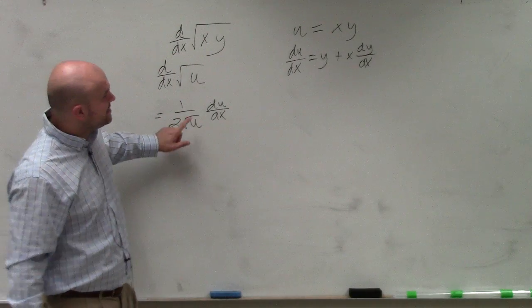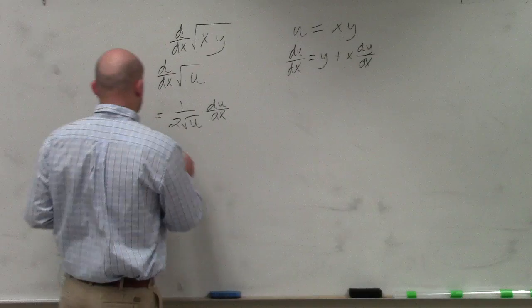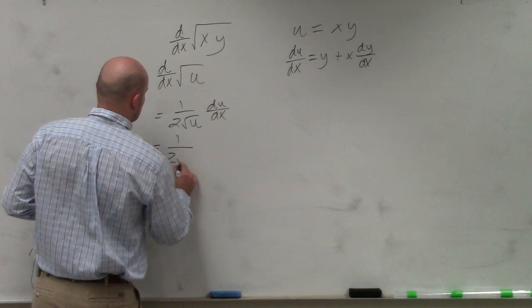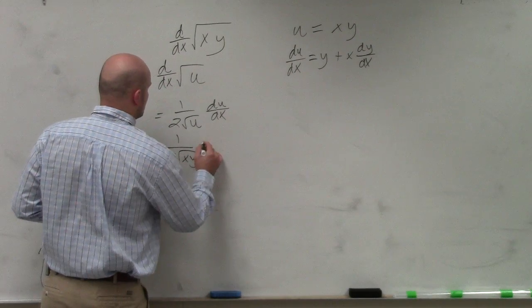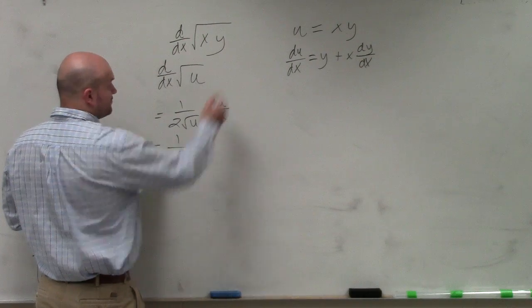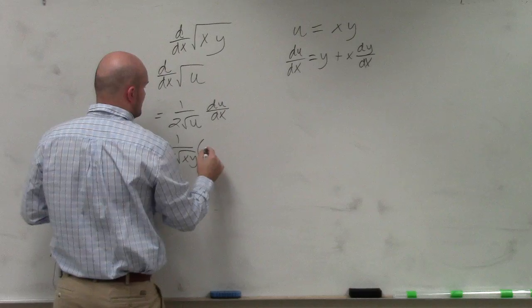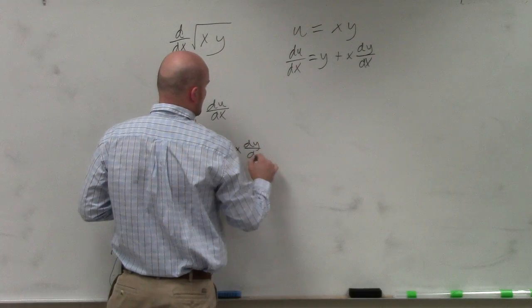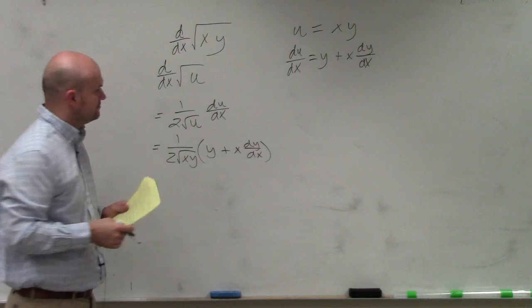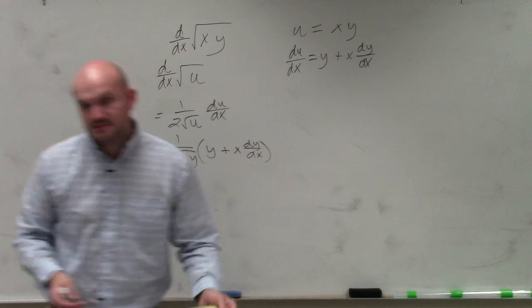Now, what we're basically going to do is take my xy and plug it back in. So it's 1 over 2 times the square root of xy times the derivative of my du dx. So du dx is right there, which is y plus x dy over dx, and then that's it.